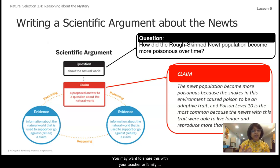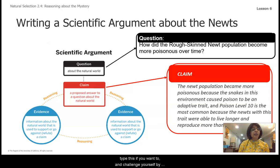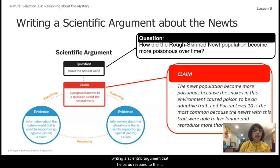You may want to share this with your teacher, a family member, or a friend as you sharpen those scientific argumentation skills. Grab a pen or pencil and some paper — you can also type this if you want. Challenge yourself by writing a scientific argument that helps us respond to this unit phenomena about how the rough-skinned newt population became more poisonous over time.